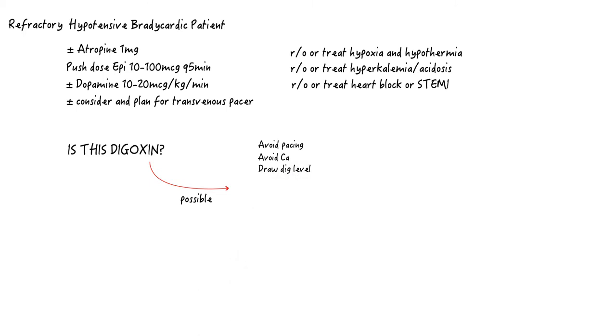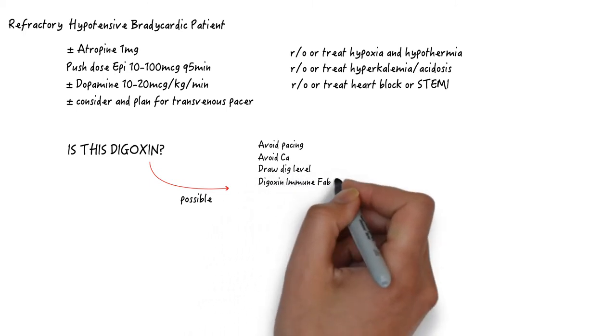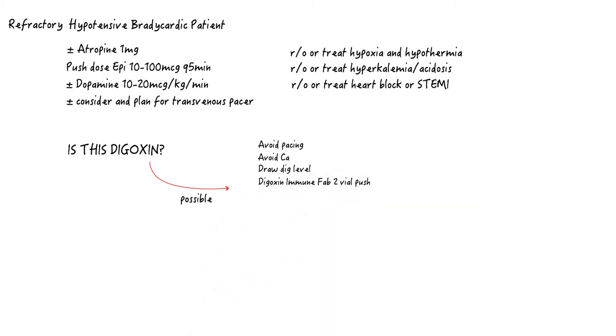If you suspect digoxin, draw a dig level, but also empirically administer two vials of digoxin immune fab push. You can forget all about digoxin immune fab after until the dig level comes back. By that time, enlist help from a toxicologist for further dosing.